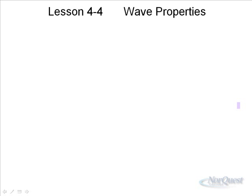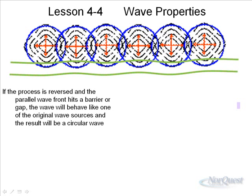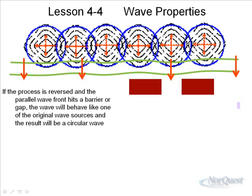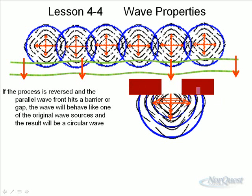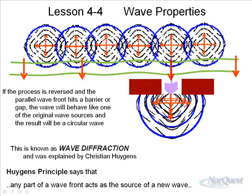Now, if we reverse the process so that a parallel wave front hits a barrier with a gap, we find that as the wave passes through the gap, it produces a circular wave. This phenomenon is called wave diffraction. It was first explained by Christiaan Huygens. Huygens' Principle states that any part of a wave front acts as the source of a new wave.